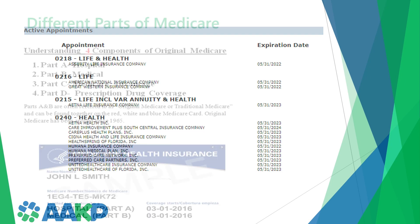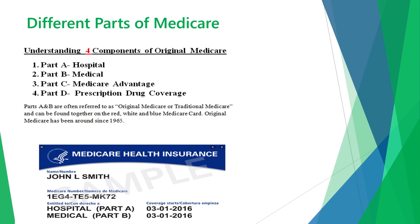Medicare has four components. Part A is for inpatient hospital stays. Part B is for medical services — your doctor visits, lab work, x-rays, anything done on an outpatient basis. Part C is the Medicare Advantage plan, which gives an overall comprehensive benefit. Part D is for prescription drugs. A Medicare Advantage plan includes Part A, Part B, and Part D — that's what makes up Part C. Original Medicare, which includes Part A and B, has been in place since 1965.